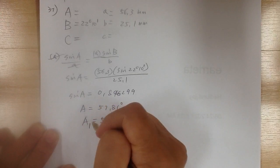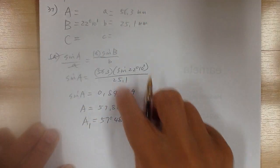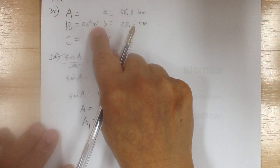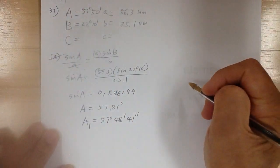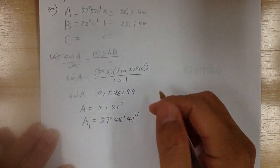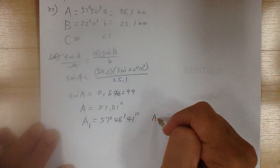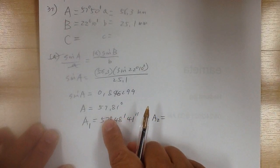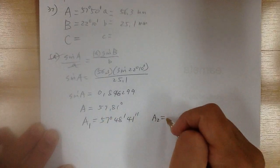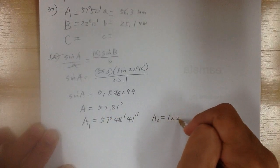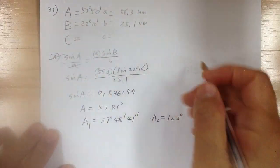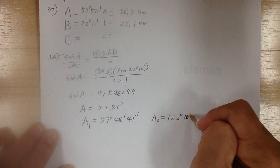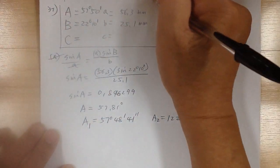That's your A1. Rounding to the nearest 10 minutes, that's 57 degrees and 50 minutes. Now get A2: 180 minus that gives 122 degrees and 10 minutes. This one is going to have two triangles. Get your A2 right away — don't try to find C yet and get confused. Get all the information before you proceed.